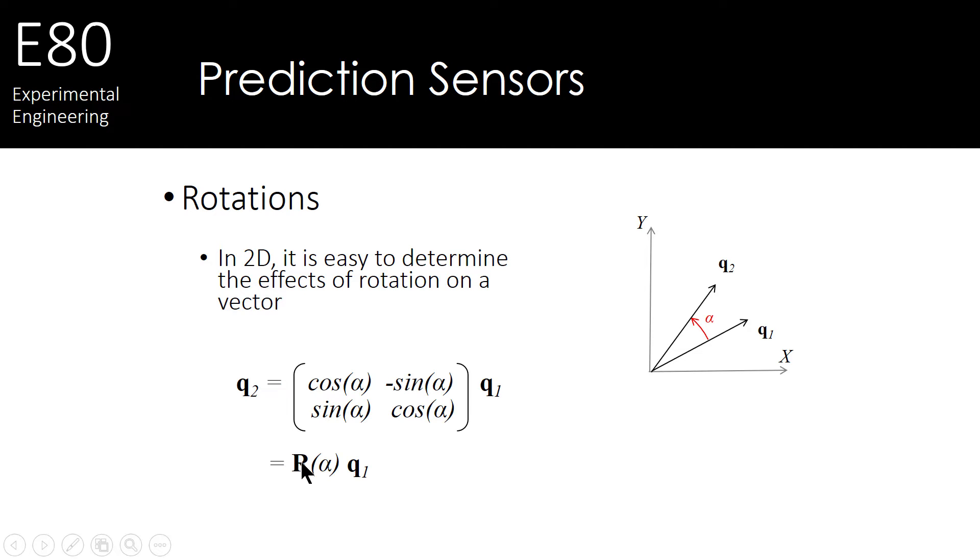We can rewrite this, R, as a function of alpha, as our rotation matrix. Hence we can take any point in our coordinate frame and rotate it to a new point. Note that we're rotating about the origin.